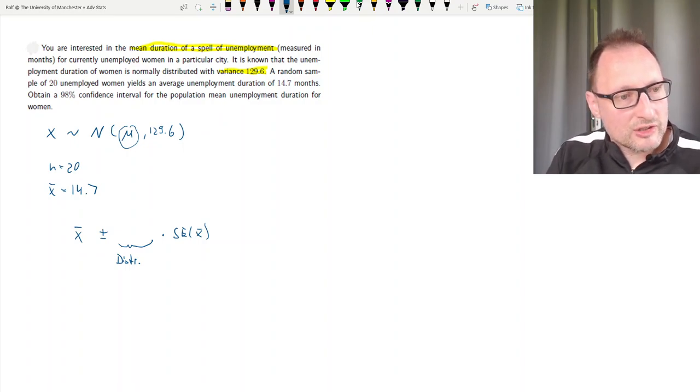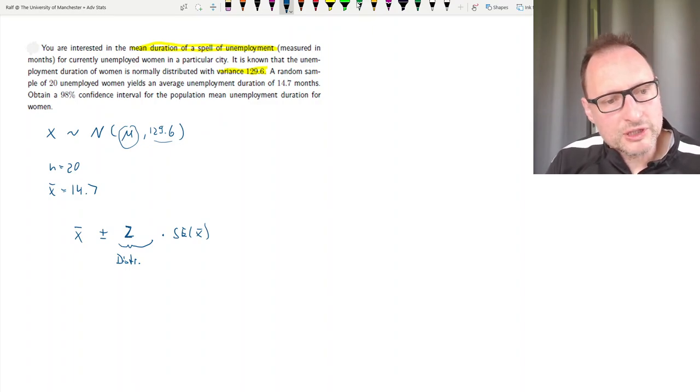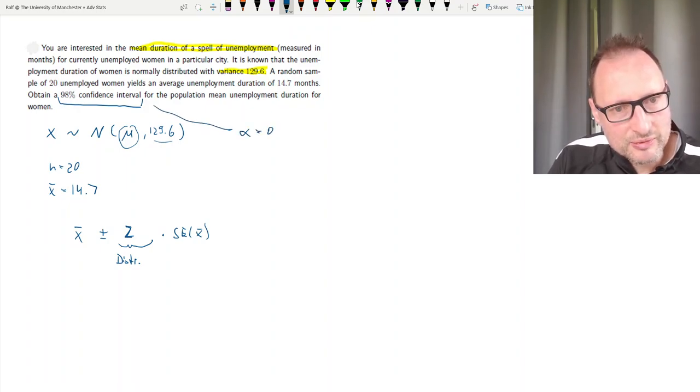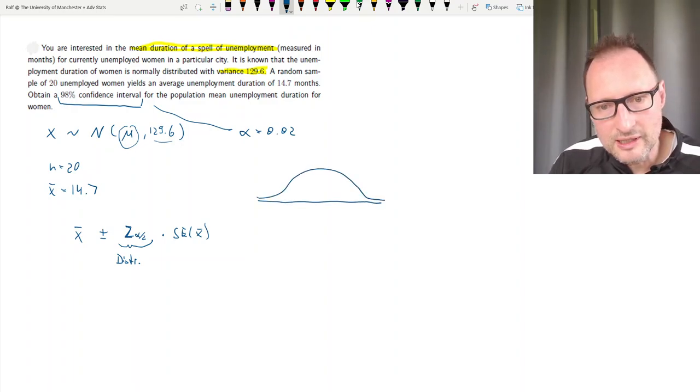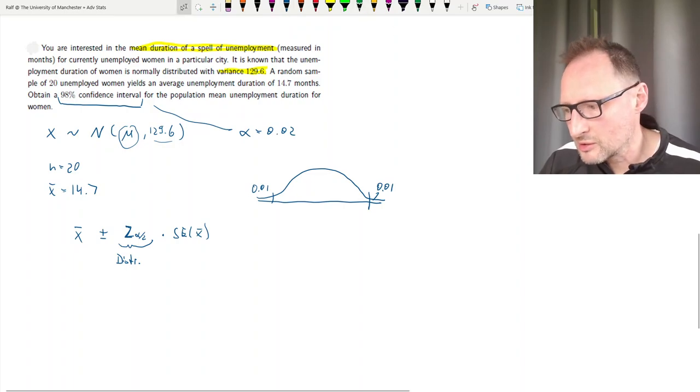Now, in our case, we know that X, the population is normally distributed and we know the variance. That means that this value, that X bar is actually also normally distributed. And that means this value comes from the standard normal distribution, which we usually label with a Z. Now, which value from the distribution do we need? Well, that depends on what sort of confidence interval we calculate. We want a 98% confidence interval. So that means that alpha is equal to 2%. And it's always the alpha divided by 2 value. So it's the value in the normal distribution that cuts off 1% of the distribution on either side. So let's actually start getting to this.